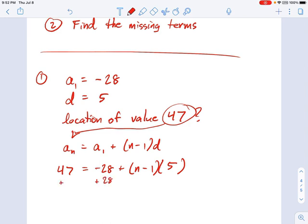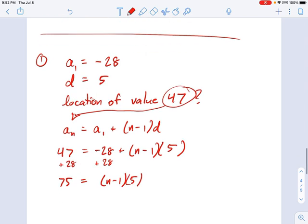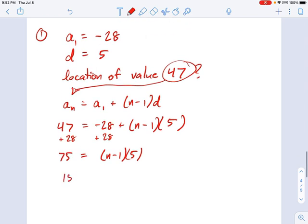Now we're adding 28 to both sides, right? I just want to solve the equation, figure out what n is. I get 75 equals n minus 1 times 5. Divide each side by 5. 15 equals n minus 1. Add 1 to each side. We get n equals 16.